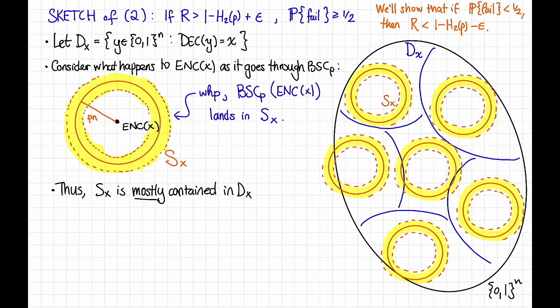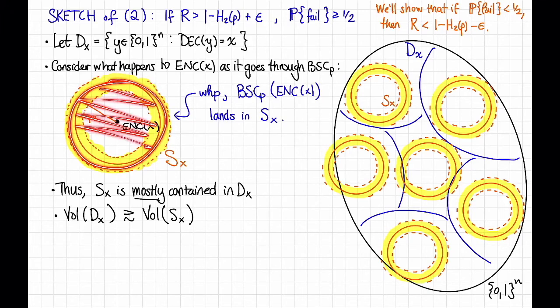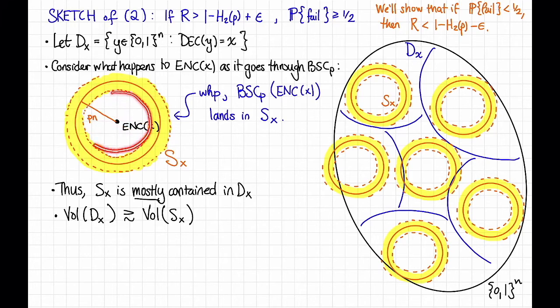What that means is that for each of these x's, the volume of the region D_x has to be greater than or equal to, ish—this twiddle means up to some constant factor maybe—the volume of S_x. And it turns out that the volume of S_x, this annulus here, is pretty close to the volume of this Hamming ball. That's because it turns out that the amount of mass in the interior of a Hamming ball is basically negligible compared to the amount of mass on the outside. So again, up to some squiggly squigglies, this is about equal to the volume of the Hamming ball of radius p times n in F_2^n.